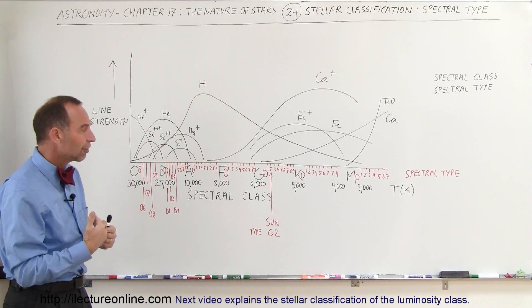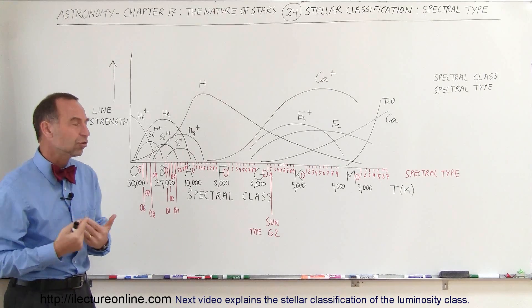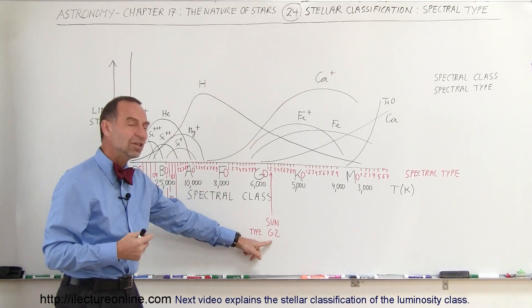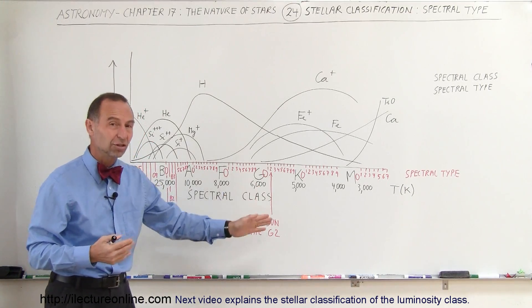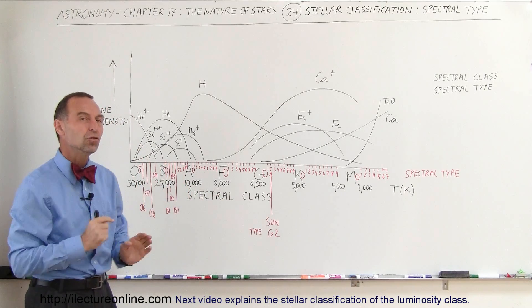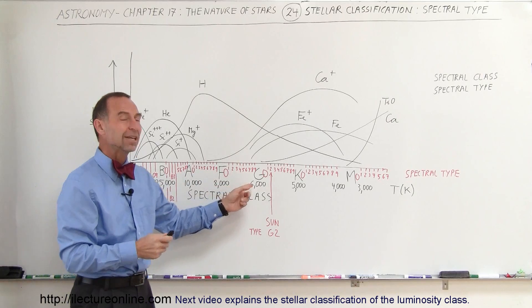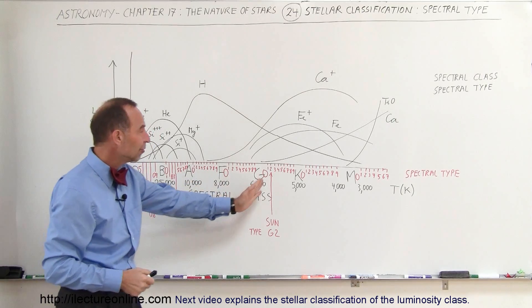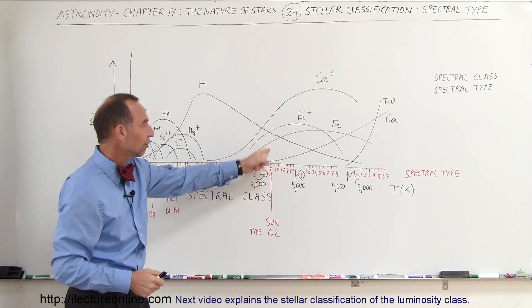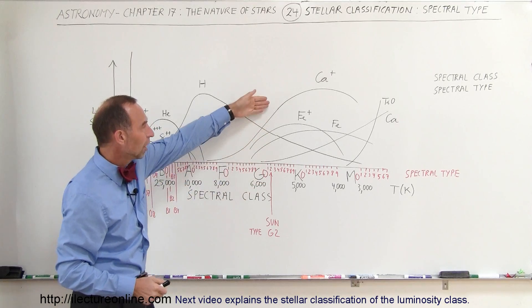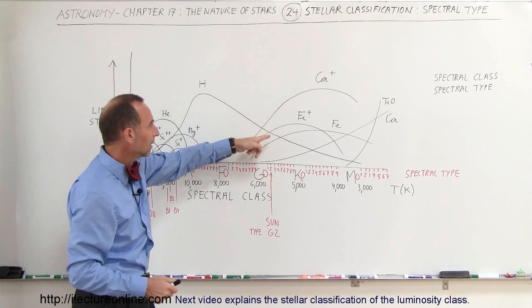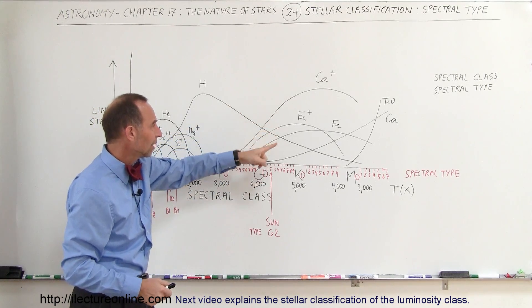But so when you talk about our sun, for example, our sun is a G-class star, but it's of type G2. It's not a G1, it's not a G3, it's exactly a G2, which is associated with a temperature of just under 5,800 degrees Kelvin. And then if you can look over here, you can see that it has a fairly good distribution of the calcium plus one line, the hydrogen line, the iron plus one line,